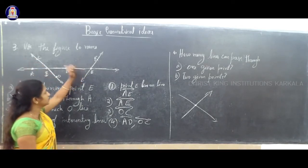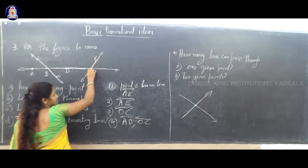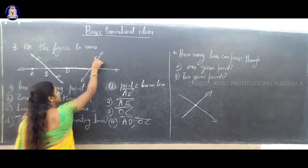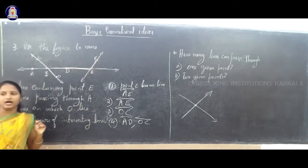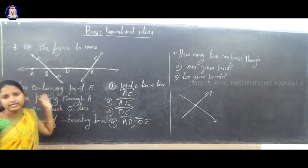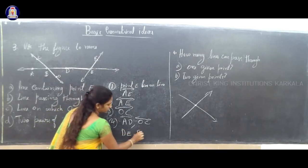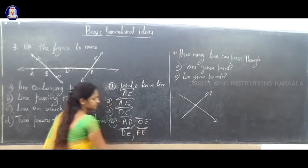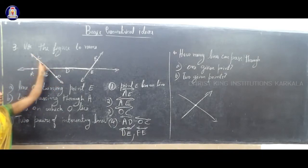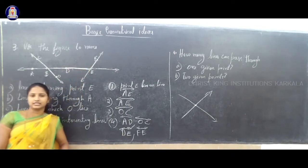Another pair of intersecting lines: these two lines will intersect at one point. Those lines are DE and FE. DE and FE are intersecting lines.